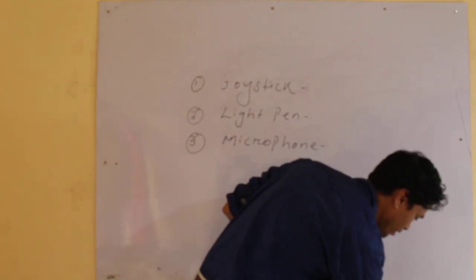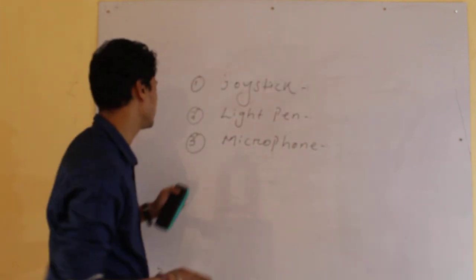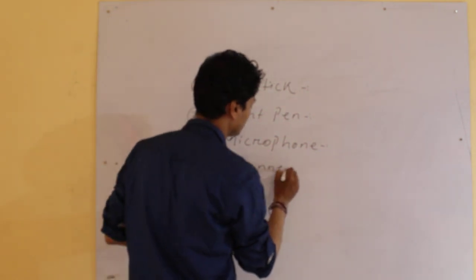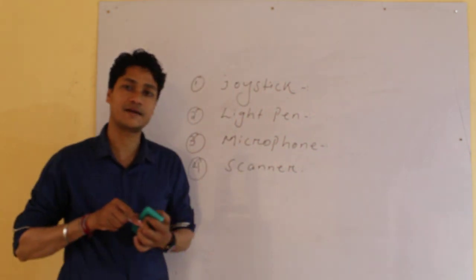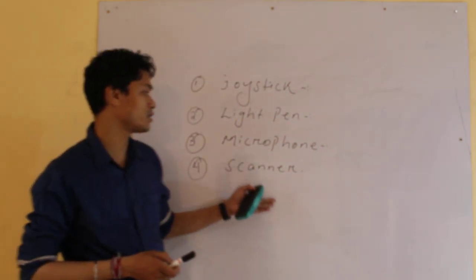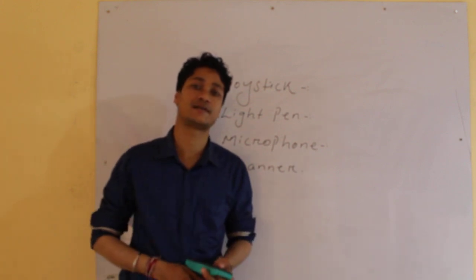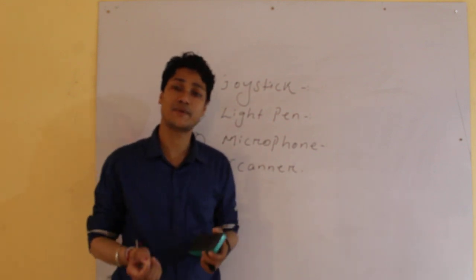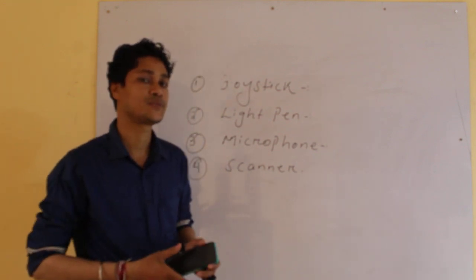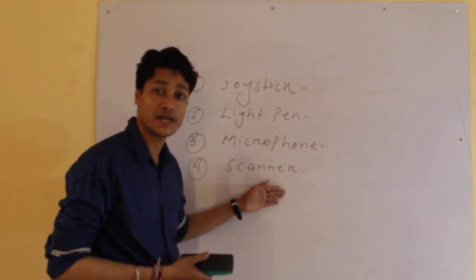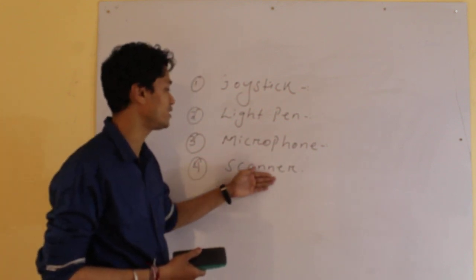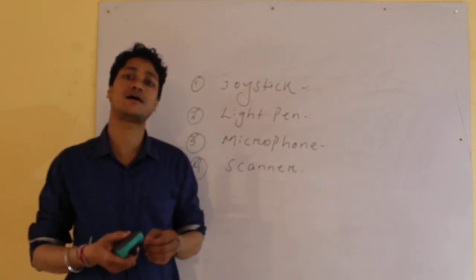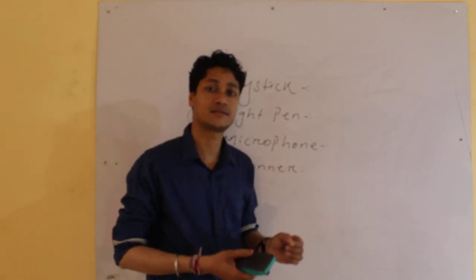Now the last one is scanner, the fourth one is scanner. Scanner means this one is a flat shape object that is used to scan our photos or images into the computer system. This is one of the input devices and what it does is it scans, means it takes our photos and any image inside the computers.